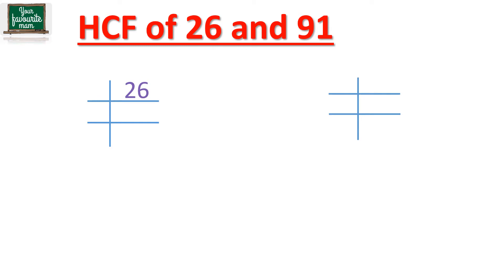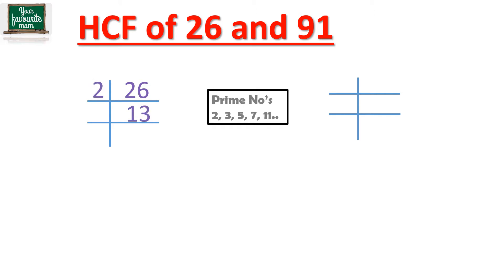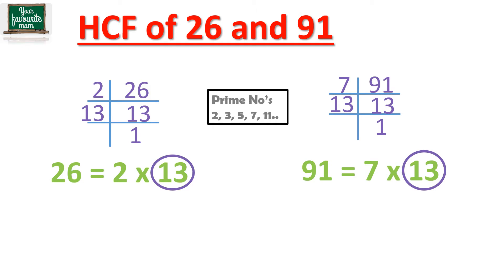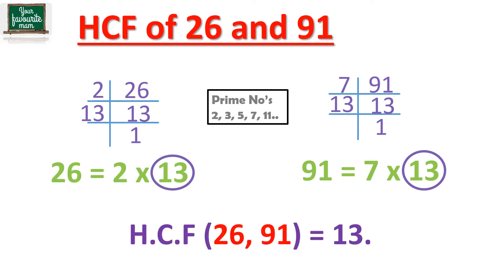So let's try and find out the HCF of 26 and 91 using the prime factorization method. 26 when divided by 2 gives 13, and since 13 is a prime number it is divisible by itself. So the factors for 26 are 2 × 13. For 91, it is divisible by 7. So 91 divided by 7 gives 13, and 13 being a prime number is divisible by itself. So the factors for 91 are 7 × 13. The common factor between them is 13, so the HCF of 26 and 91 is 13.